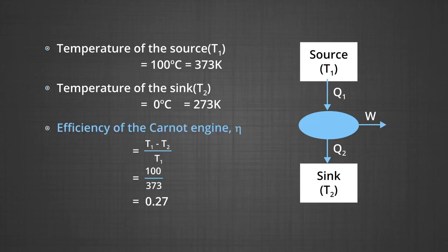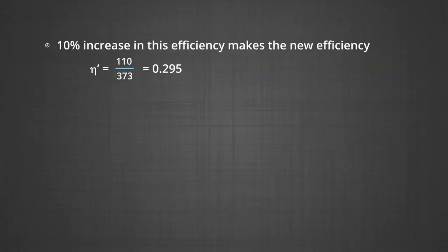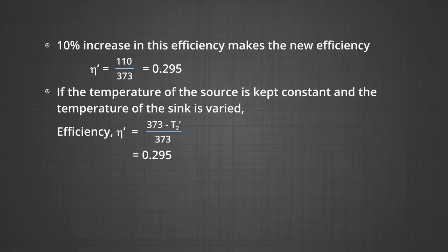The efficiency of a Carnot engine is (T₁ − T₂)/T₁ = (373 − 273)/373 = 100/373 ≈ 0.268. A 10% increase in this efficiency gives a new efficiency of 0.268 × 1.10 ≈ 0.295. In case 1, where the temperature of the source is kept constant and the sink temperature is varied, the efficiency becomes (373 − T₂')/373 = 0.295.